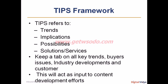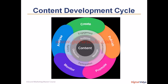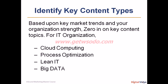Every company is undergoing transformation because of digital marketing — all transactions, buying and selling, everything is getting digitized. Once you understand those trends, you start creating content. Step three: strategize ongoing content development. The content development lifecycle starts with creating the content, then publishing it on multiple touchpoints. Once published, you promote it across multiple channels. Then you monitor how your content is being received — whether people are liking it, sharing it, resonating with it. Finally, you analyze and use those insights as feedback to create the next set of content.